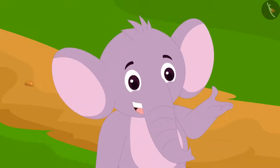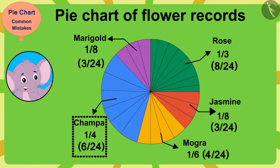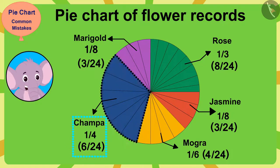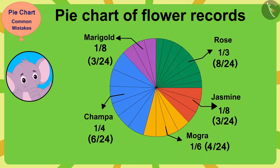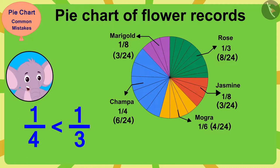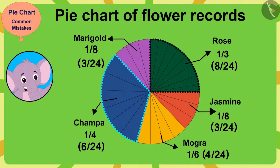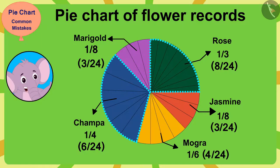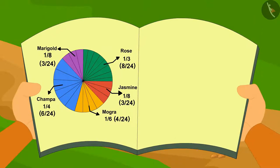Appu said wow, Chanda had made a very beautiful pie chart, but then noticed something wrong. Champa flowers have been used in one-fourth of orders and rose flowers in one-third of orders. One-fourth is smaller than one-third, but in the pie chart the one-fourth part of Champa flowers appears larger than the one-third part of the rose flowers. How can this be possible? Chanda said she had counted properly and colored the parts carefully.